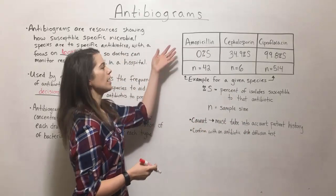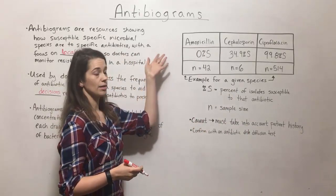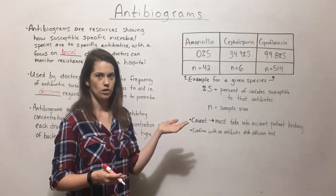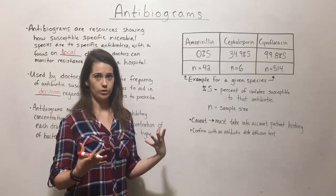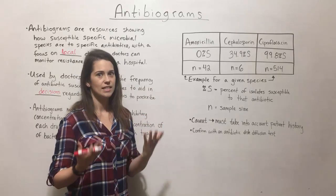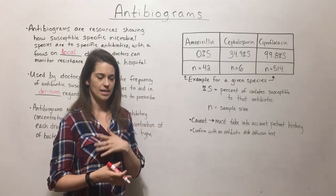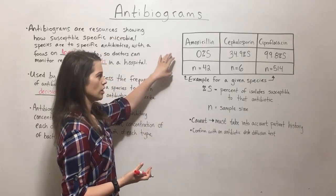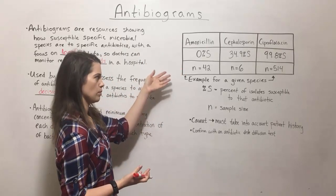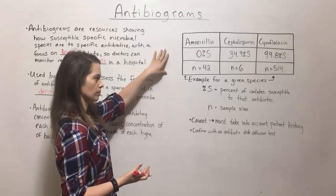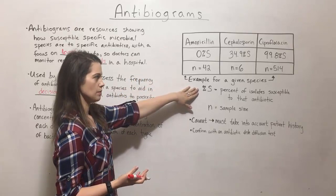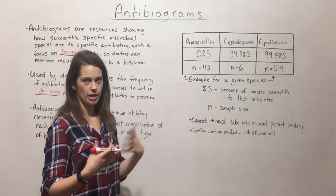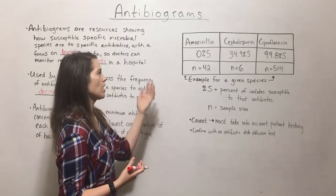Here I've got an example table — keep in mind that an actual antibiogram is going to be very large, looking at probably dozens of different antibiotics against a huge number of microbial species. We're just looking at a small example here. For a given species, percent S means the percent of isolates — basically the percent of isolates from any number of patients — that were susceptible to the antibiotic.